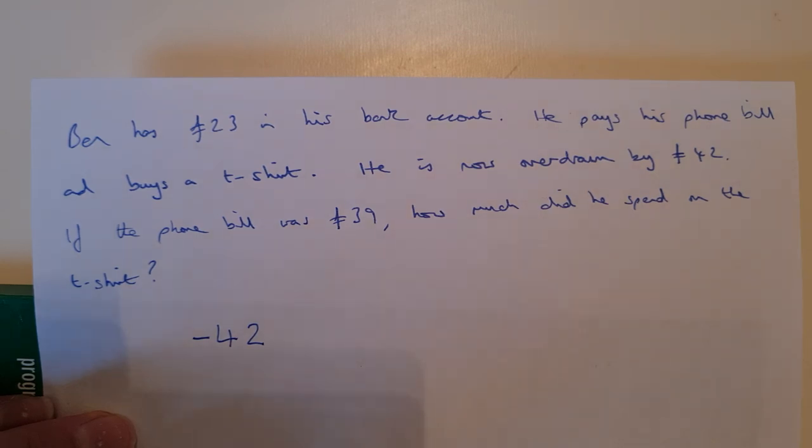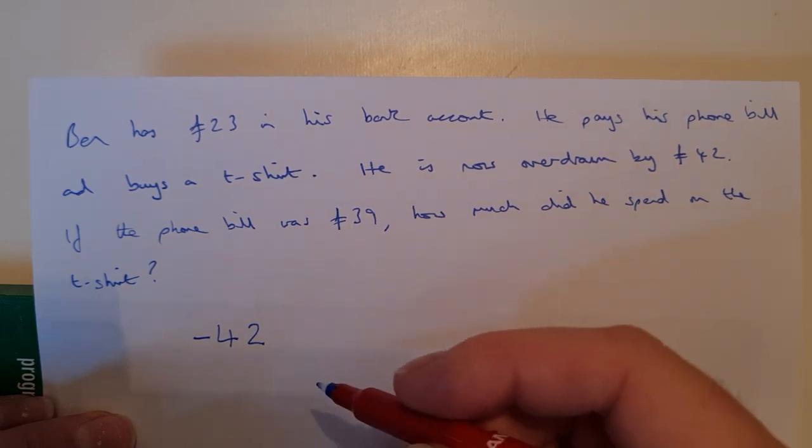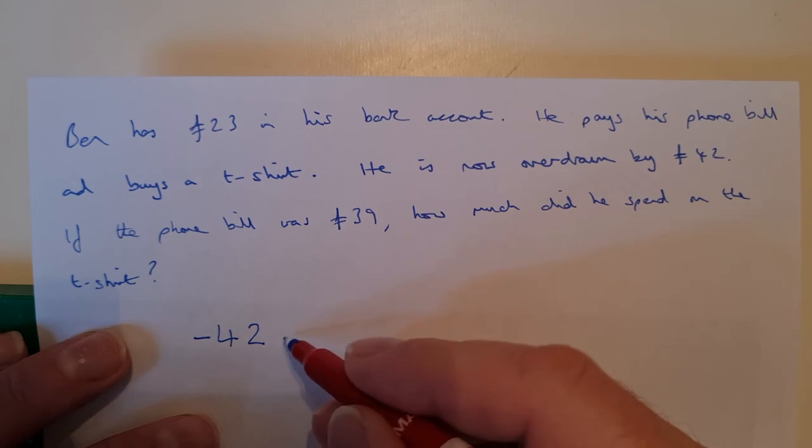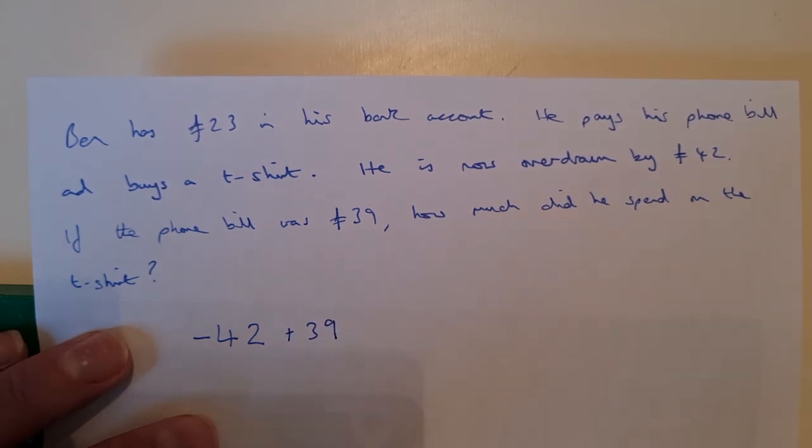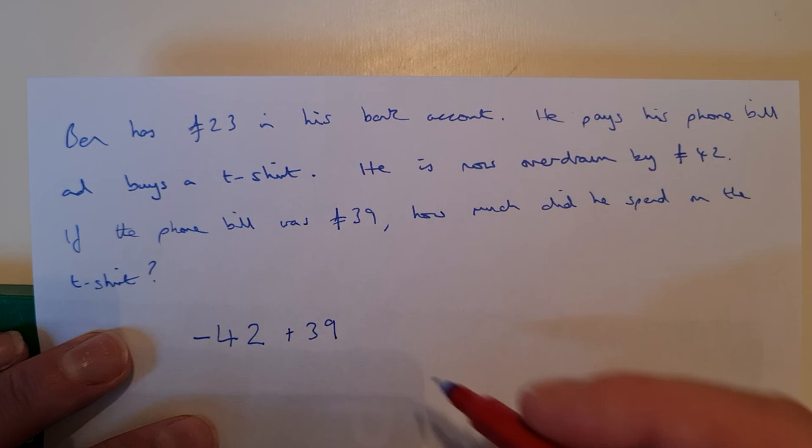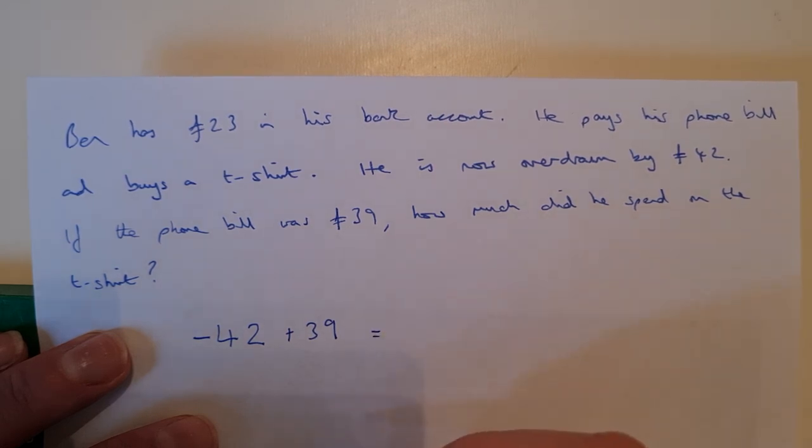Let's think about this very carefully. He's now overdrawn by £42, so he's got minus £42 in his bank, he owes the bank £42 because he's spent more money than he's got. Let's put that phone bill back on to his account. So I'm at minus £42, I'm going to put that phone bill back on there just for the moment. And if I've got minus £42 and I add £39 to it, I get to minus 3. If you've got yourself a long number line, you can count along.